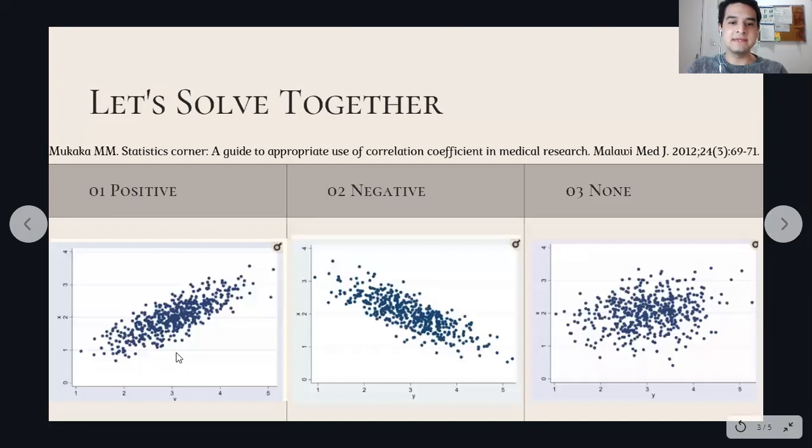So here I took these images from Mukaka. And here we can see three scenarios: the positive correlation, the negative correlation, and none where there isn't a correlation.